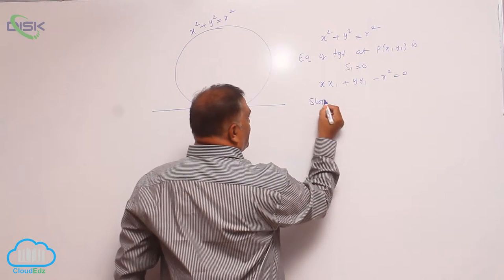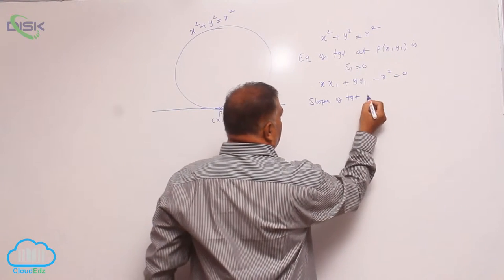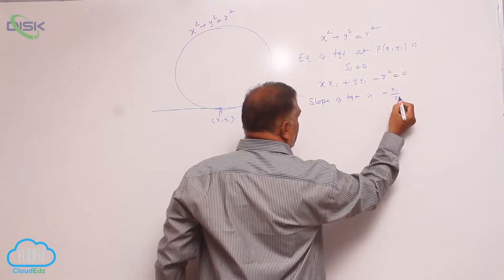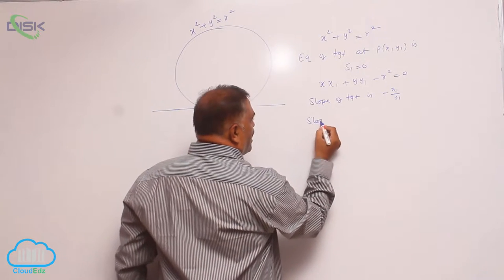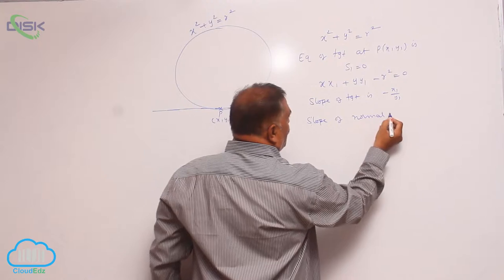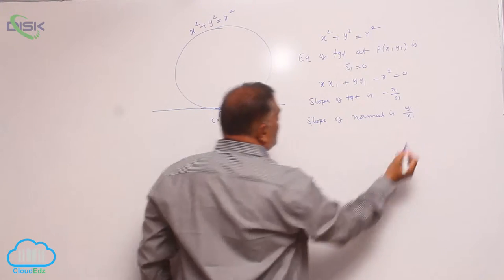Slope of tangent is -x₁/y₁. So, slope of normal is y₁/x₁.